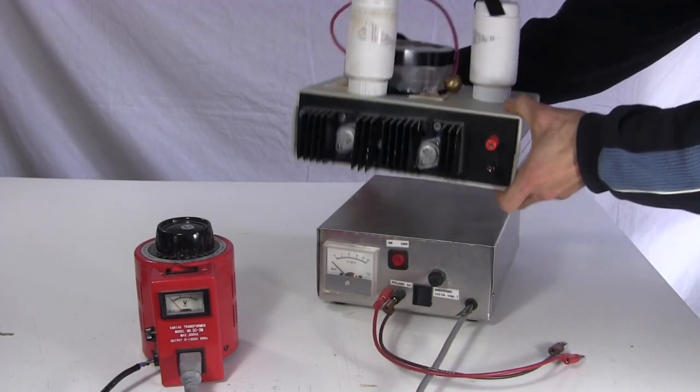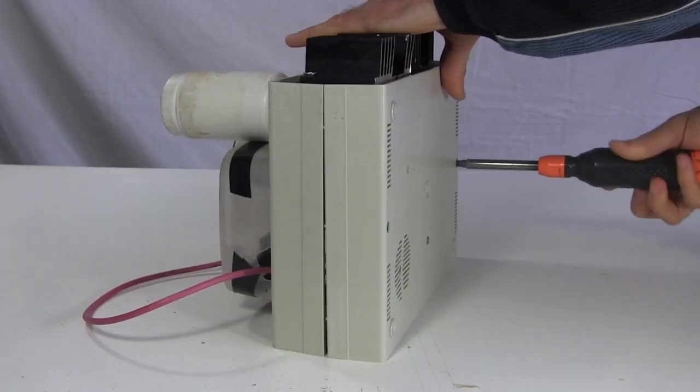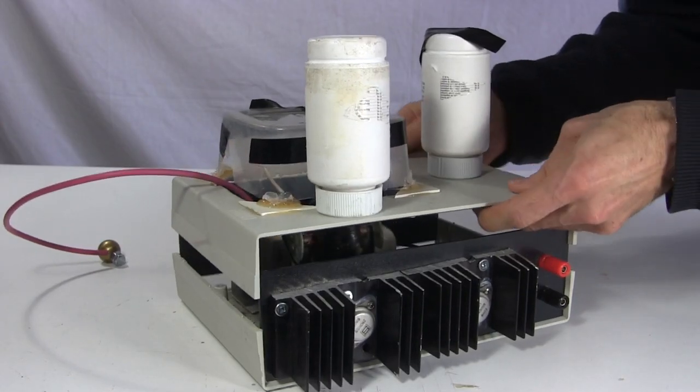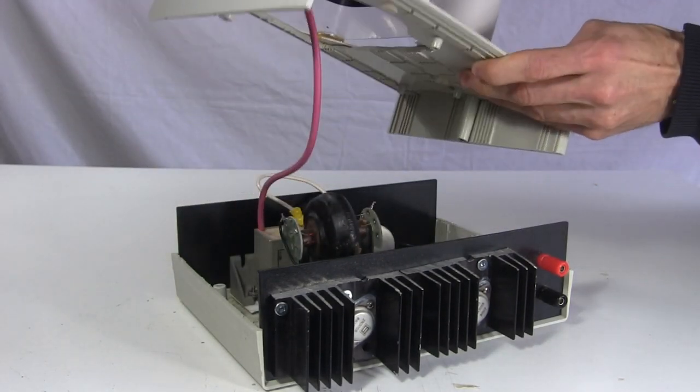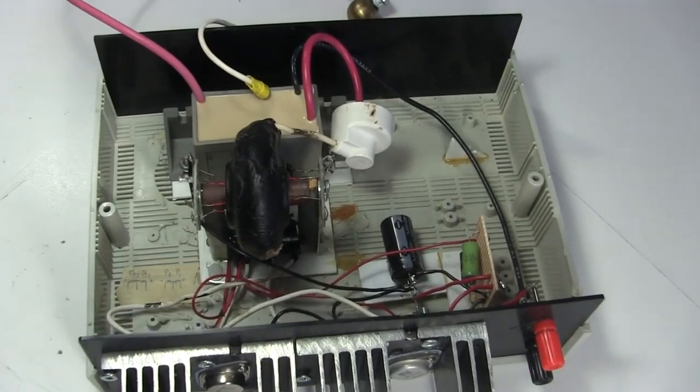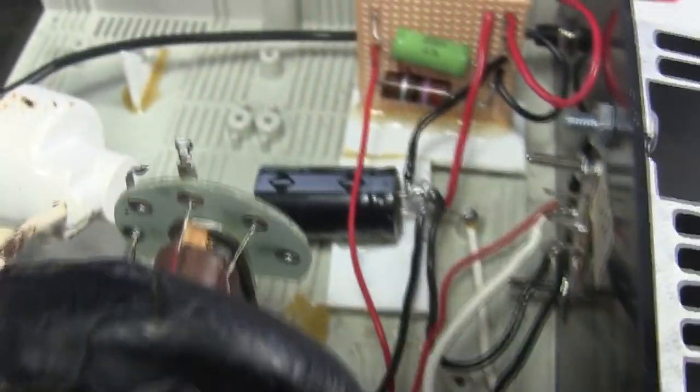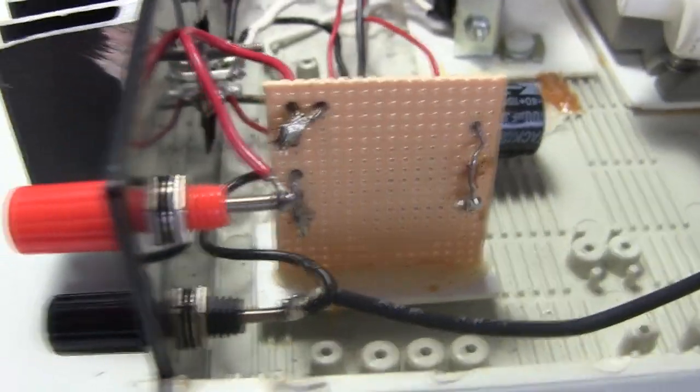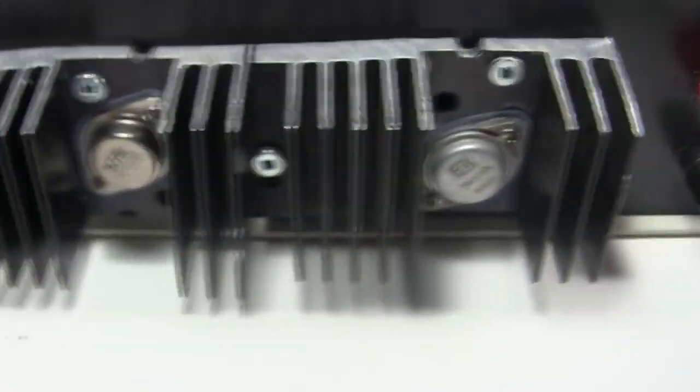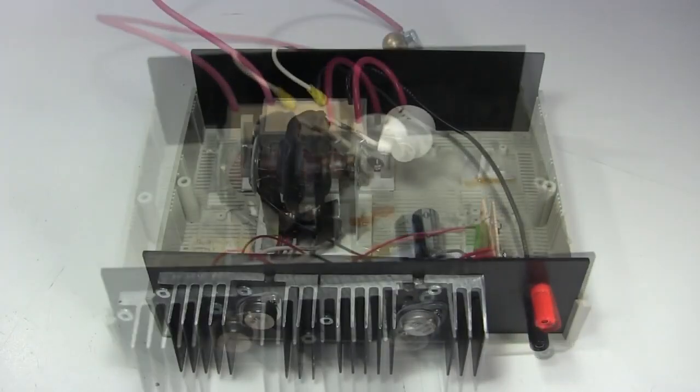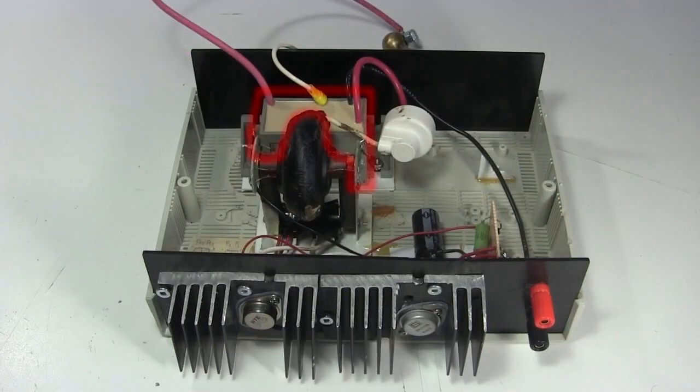So I open it up. I start with a visual inspection, looking for any broken wires or discolourations. But I don't see any. The last component at the output is this tripler, or Cockroft-Walton voltage multiplier.